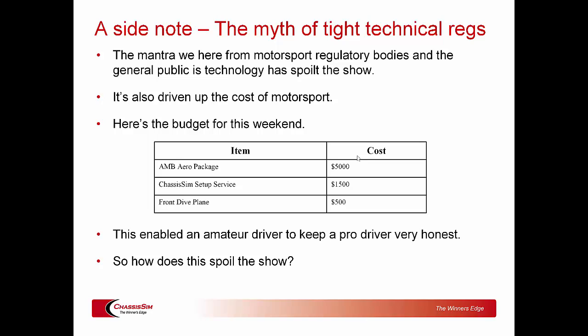Let's look at the big-ticket budget items that laid the platform for NA Auto Engineering to go from P17 to P3: AMB Aero package — about $5,000; ChassisSim setup service — $1,500; front dive planes — $500, most of which was just machining the carbon fiber. Throw in $10 for the pop rivets used to attach the dive planes to the front spoiler. To any technoskeptics or motorsport regulatory body listening: these mods enabled an amateur driver — albeit a pretty good one — to keep a pro driver very honest, and that pro driver would eventually take P1 in the open class. How does this spoil the show?